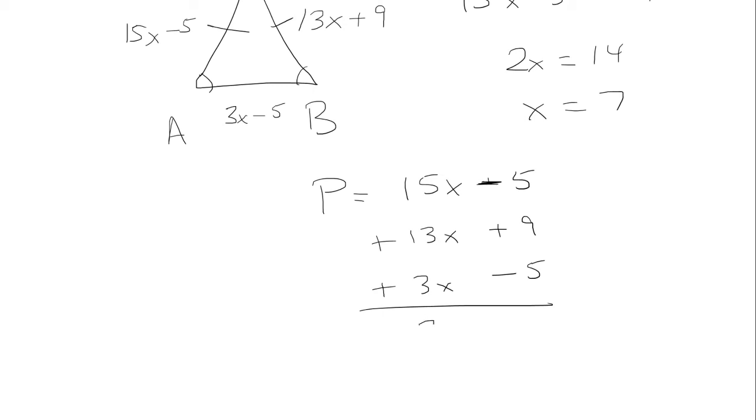Negative 5 plus 9 is 4, minus 5 is negative 1, so we get 31x minus 1. Okay, so x equals 7, so we plug that in. 31 times 7 minus 1. 31 times 7 is 217, minus 1 is 216.